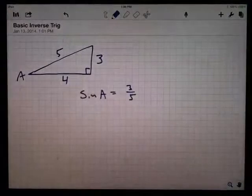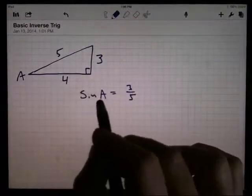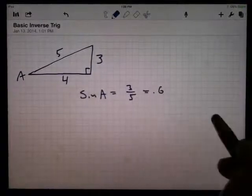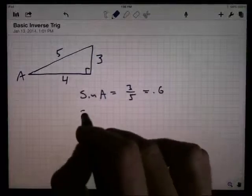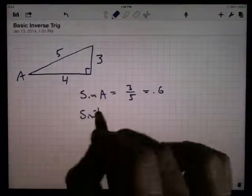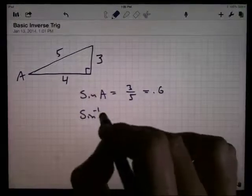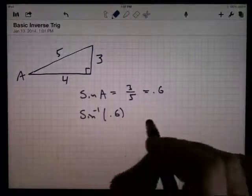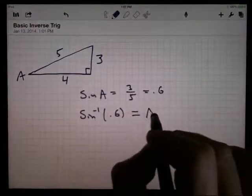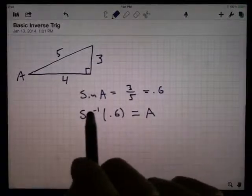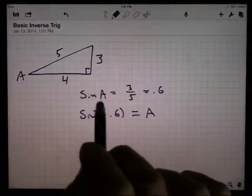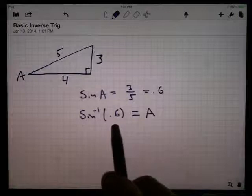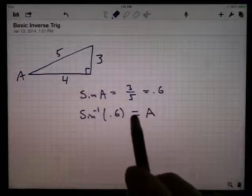What the inverse trig function does is goes the other way. So sine takes the angle A and gives you back 3 fifths or 0.6 if you want it as a decimal. The inverse trig function, which we write as sine to the minus 1 or sine inverse, the input now is going to be this output. Sine inverse of 0.6 should be angle A. So the trig function takes the angle and sends it to the ratio of sides. The inverse trig function takes the ratio of sides and sends it to the angle.